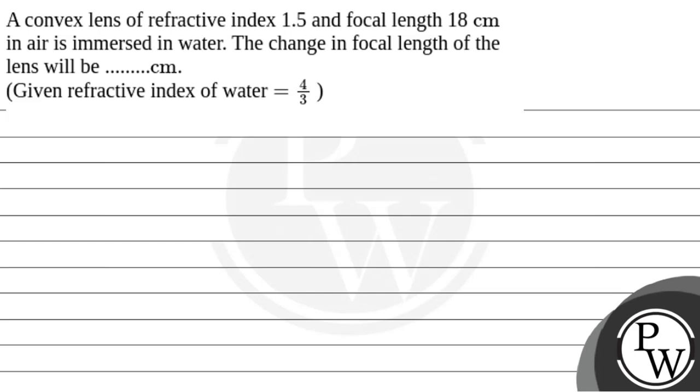Hello! Let's read out the question. Question says: A convex lens of refractive index 1.5 and focal length 18 cm in air is immersed in water. The change in focal length of the lens will be... centimeters. Given refractive index of water is 4/3.